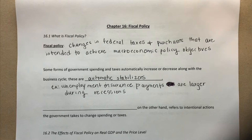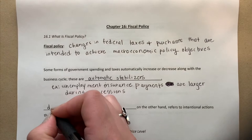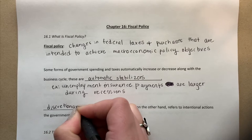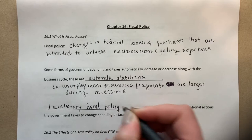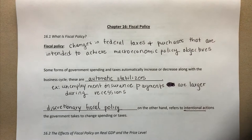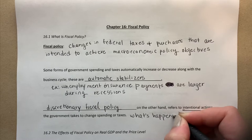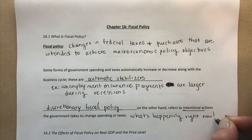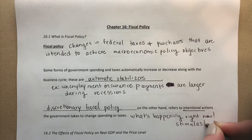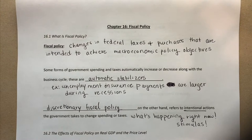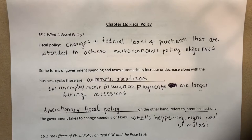On one side we have automatic stabilizers, which occur automatically with the business cycle. And then we also have what's called discretionary fiscal policy, which refers to intentional actions the government takes to change spending or taxes — essentially what's happening right now with stimulus. There are automatic stabilizers occurring right now, but we also have discretionary fiscal policy that the President and Congress have passed.